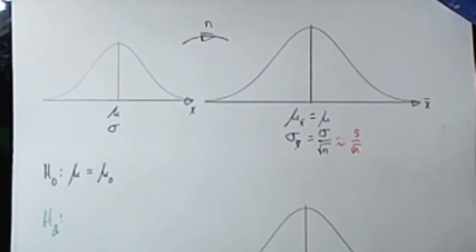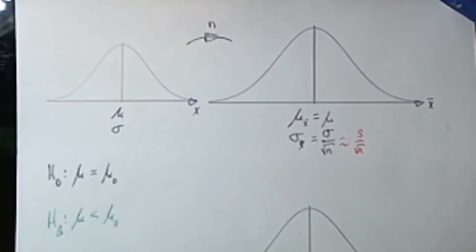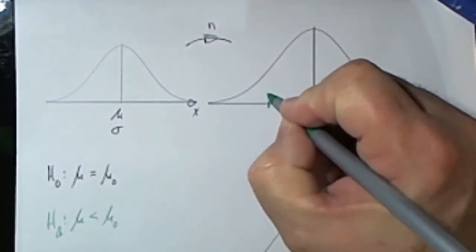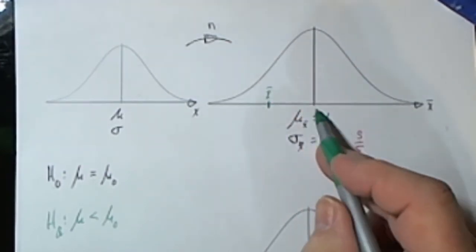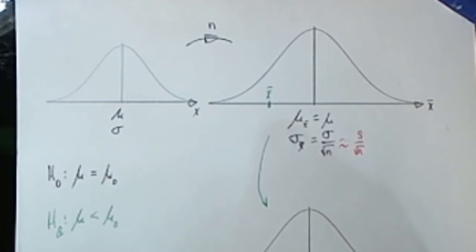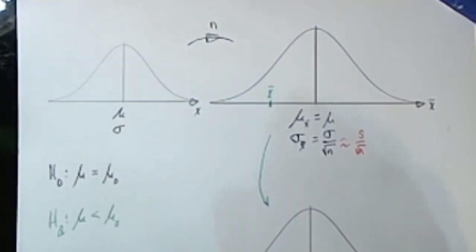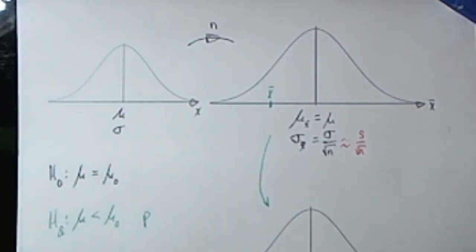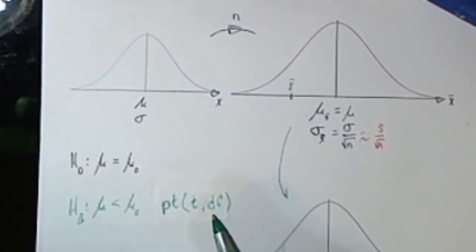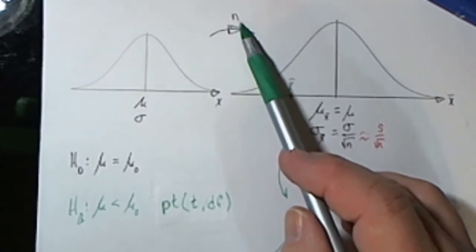The problem you're working on may have the alternative hypothesis listed in one of three different ways. The first is that mu is less than the value that the null hypothesis stated. In that case, it's most likely that the x-bar we get from our sample is going to be to the left of the mean. When that gets translated to a t-value, it's going to be a negative t-value — a lower tail test. So our p-value is going to be that area, calculated as pt of t with the appropriate degrees of freedom. In this case, the degrees of freedom will always be n minus 1.